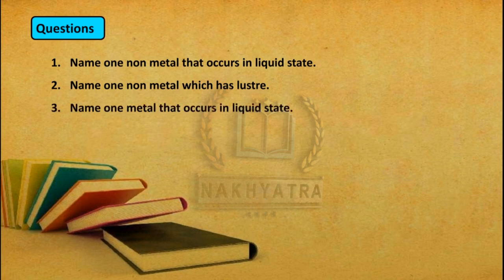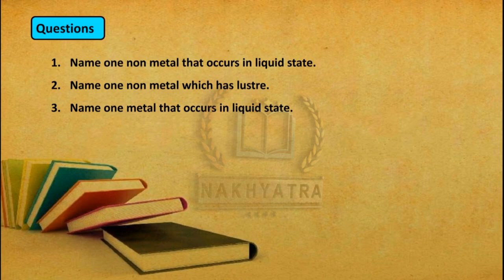Question number 3: Name one metal that occurs in liquid state. There are several examples you can give. The first one is mercury — mercury is a metal that occurs in liquid state. You should try to find out what the other metals are which occur in liquid state.